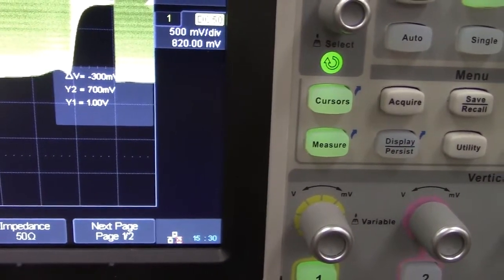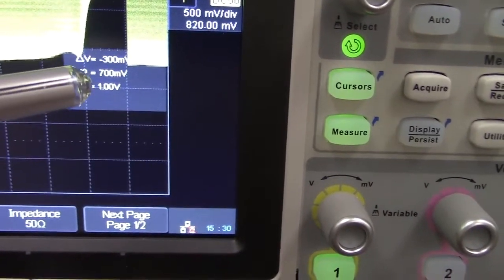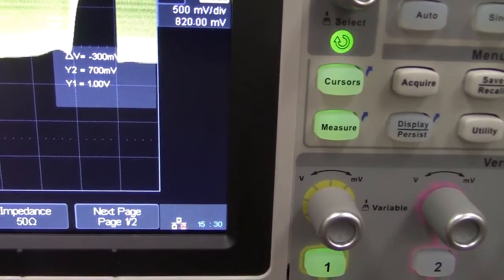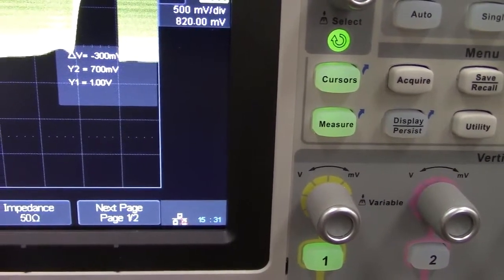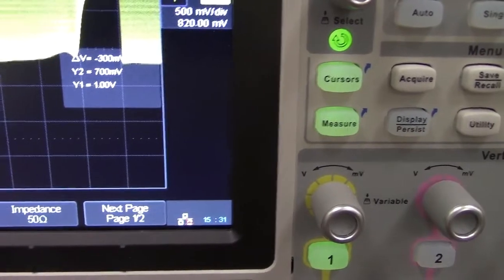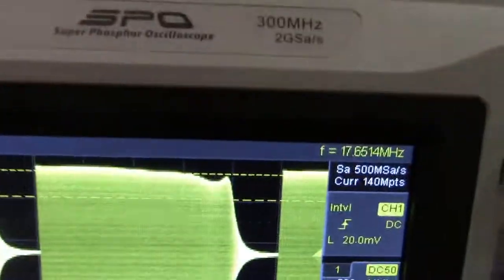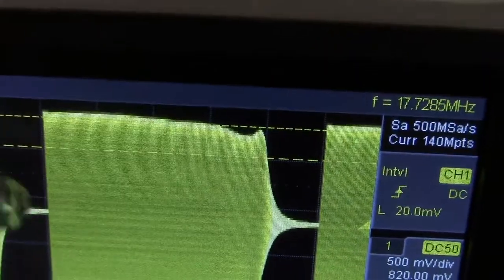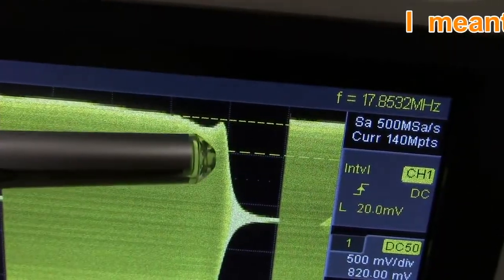And the other, since we wanted to take a look for the 3 dB roll off, I just set the second cursor to 700 millivolts. It's actually 707 would be the 3 dB point for 1 volt, but very close to get us in the ballpark. And you'll see that the two cursors here, we've got 1 volt and we've got the 707.